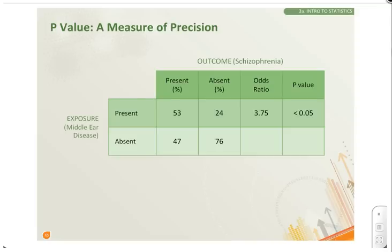In other words, there is a less than 1 in 20 probability that the observed effect would have occurred by chance. This gives us a measure of statistical significance.